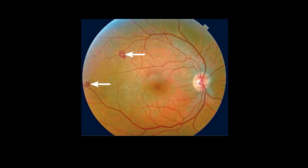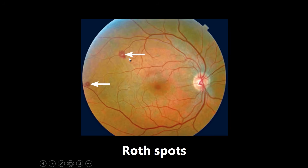This next one is going to be Roth spots. These are retinal hemorrhages that have a pale center — you can see it really well in this image, a nice pale center there. These are seen in bacterial endocarditis. In the previous video I mentioned that bacterial endocarditis is characterized by a lot of different high-yield images and names, and this is one of them. Roth spots: retinal hemorrhages with a pale center.